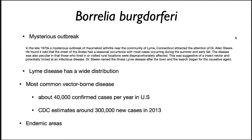Today we turn our attention to Borrelia burgdorferi, which is the causative agent of an important illness. There was a mysterious outbreak in the late 1970s of rheumatoid arthritis near the community of Lyme, Connecticut, and this attracted the attention of Dr. Alan Steere. He found it odd that the onset of the illness had a seasonal occurrence, with most cases occurring during the summer and early fall. The disease was also peculiar in that those who lived in or visited rural locations were disproportionately affected. He made the brilliant deduction that this was suggestive of an insect vector and hinted at an infectious disease. He named the disease Lyme disease after the town, and the search began for the causative agent.